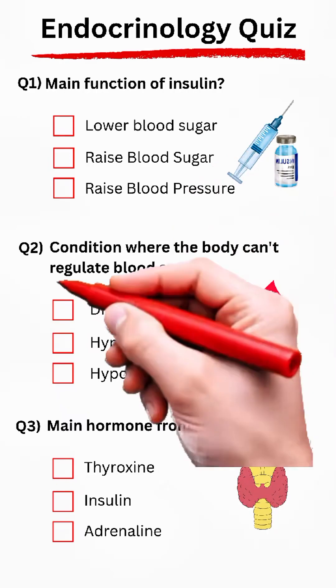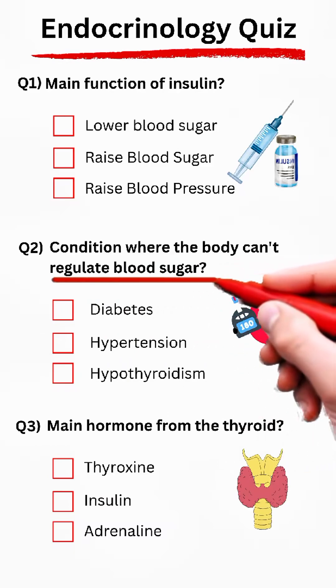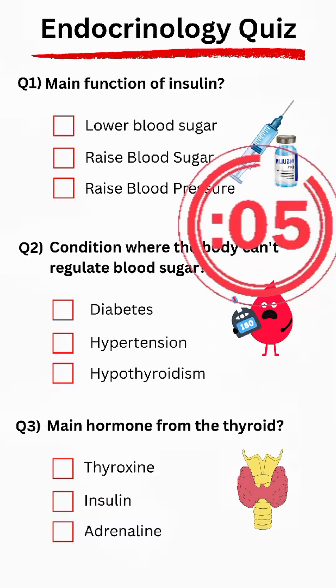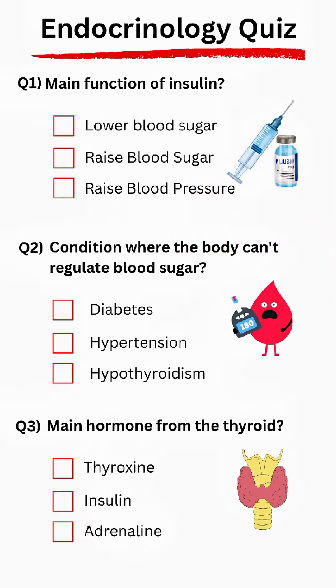Question 2: What is the condition where the body can't regulate blood sugar? Answer: Diabetes.